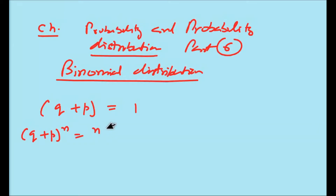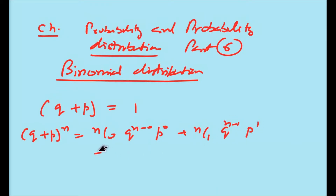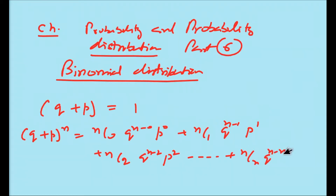You should also know the binomial series expansion: (q + p) to the power n equals nC0 times q to the power n times p to the power 0, plus nC1 times q to the power n minus 1 times p to the power 1, plus nC2 times q to the power n minus 2 times p to the power 2, and so on, up to nCn times q to the power 0 times p to the power n. If you don't know the binomial series, you need to study the binomial theorem.